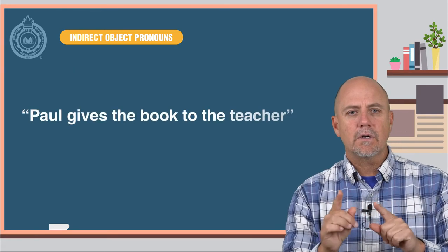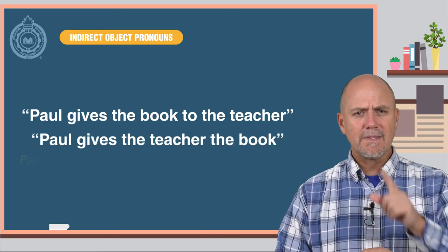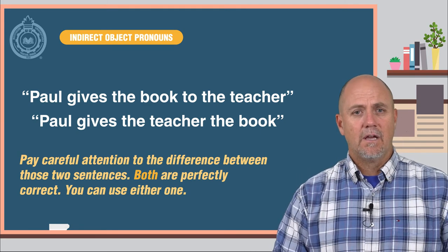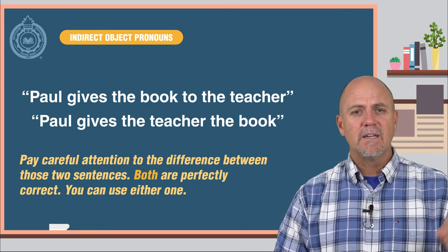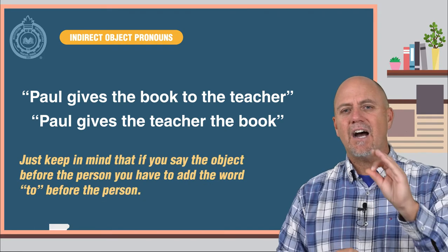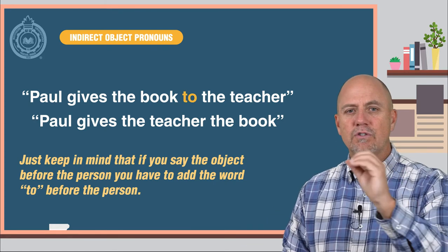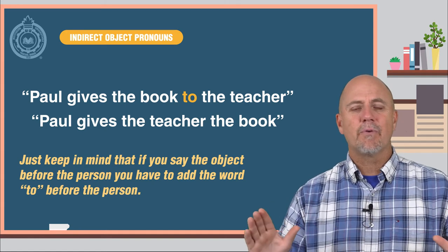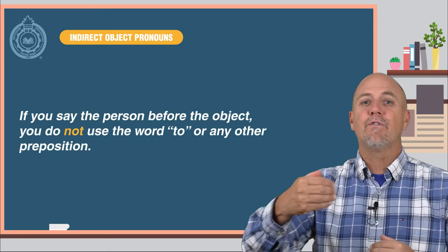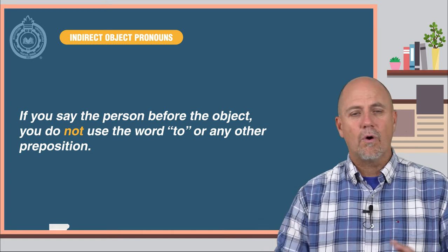Paul gives the book to the teacher, or Paul gives the teacher the book. Pay careful attention to the difference between those two sentences. Both are perfectly correct — you can use either one. Just keep in mind that if you say the object before the person, you have to add the word 'to' before the person, or any other preposition that the situation calls for. If you say the person before the object, you do not use the word 'to' or any other preposition.